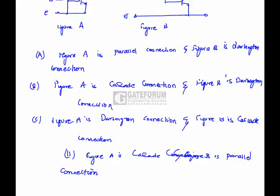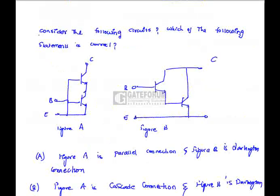Question is, consider the following circuit. Which of the following statements is correct, Figure A and Figure B? If we look into figure A, what is happening here is, here the output of the first transistor is feeding into the second transistor input.